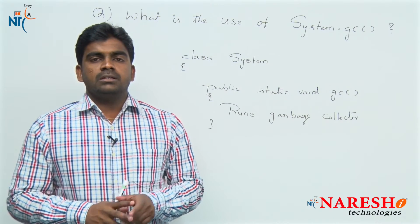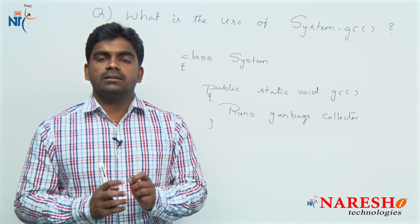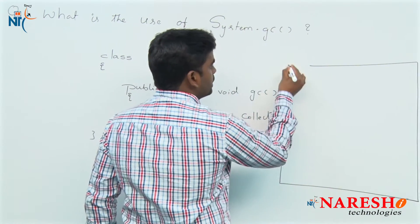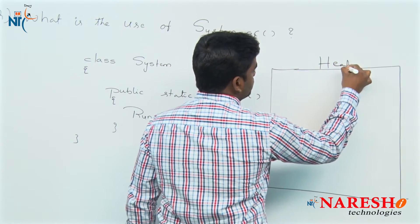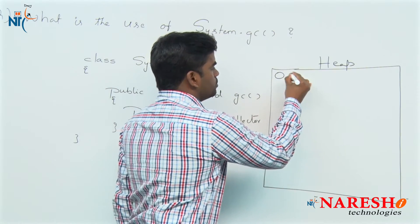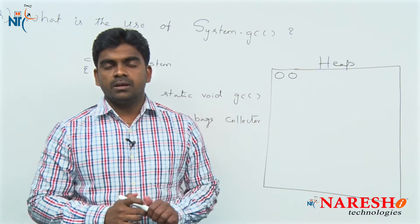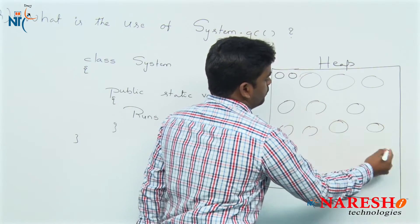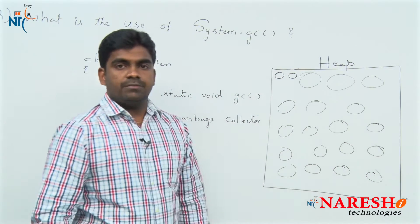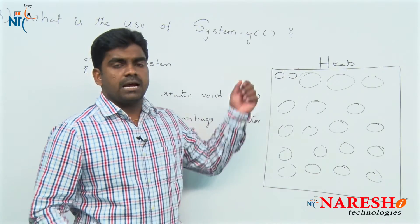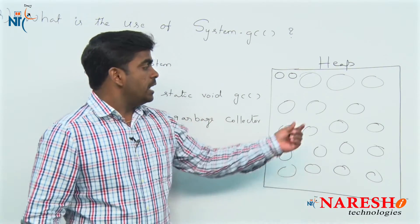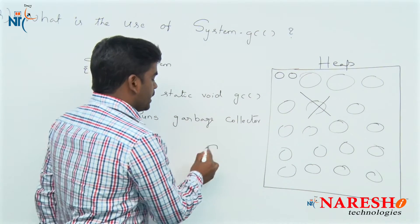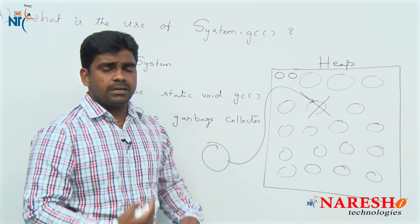The JVM will not start the garbage collector thread unnecessarily. In the heap area we create objects, and if you create only two objects, the JVM will not start the garbage collector thread. The garbage collector thread runs only when memory is running low — when the heap area is full. Only then does the JVM start the garbage collector thread, which looks for unreferenced objects, invokes the finalize method, releases resources, destroys the object, and allocates that memory to a newly created object. This is a time-consuming process.